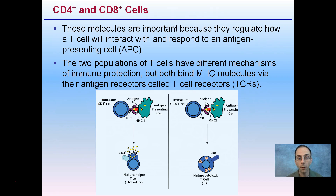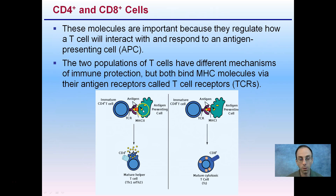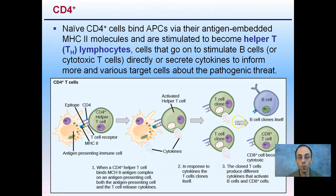Two populations of T-cells have different mechanisms for immune protection. Both bind with MHC molecules via their antigen receptors called T-cell receptors, typically abbreviated TCRs. The TCRs are the purple molecules shown here, the antigen-presenting cells are the green molecules, and here are the antigens being presented on the cell. This is going to lead us down either the CD4 pathway or the CD8 pathway, which we'll talk about next.